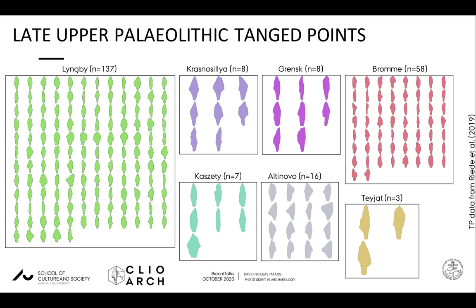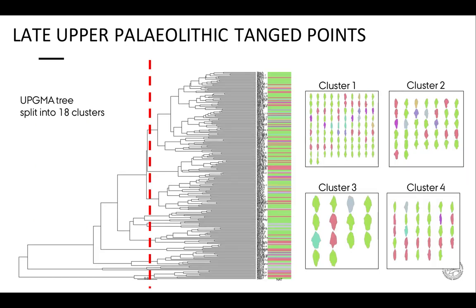Here we see a set of tanged points derived from the article by Reid and colleagues with their respective designations, which we refer to as named archaeological taxons or NATs. NAT is meant as an object-focused pendant to what John Shea labeled 'nasties' or named stone tool industries. On first sight, it already becomes apparent that the different NATs are very heterogeneous in themselves, and some are defined on a very small sample. We split the data into 18 clusters using the UPGMA hierarchical clustering algorithm. In the boxes to the right are the members of each cluster, colored in the shade of the previously assigned NAT, and it becomes apparent that the NATs do not match the outline-based GMM results.